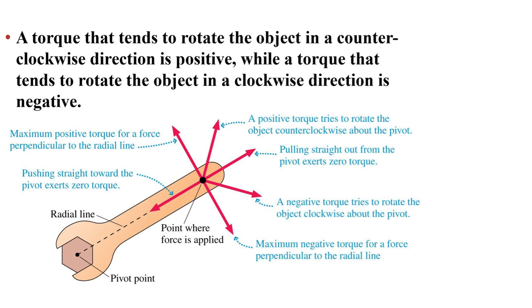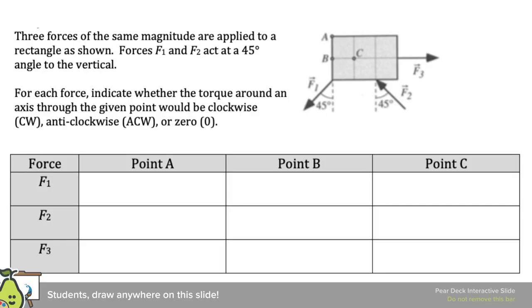A torque that tends to rotate the object in a counterclockwise direction is usually considered positive. And the torque that tends to rotate the object in a clockwise direction is usually considered negative. I say usually because you have the freedom to pick whatever axes you want or whatever reference frame you want. But the standard ones are clockwise is negative and counterclockwise is positive. So we have these three forces. They all have the same magnitude. F1 and 2 act at 45 degree angles, but F3 is horizontal. For each force, consider the point given and whether the torque would be clockwise or anti-clockwise or zero. Anti-clockwise being a physicist's way of saying counterclockwise.